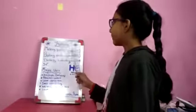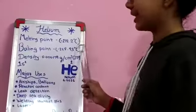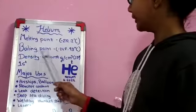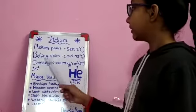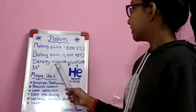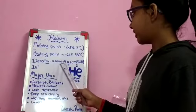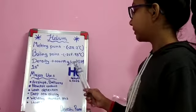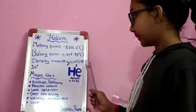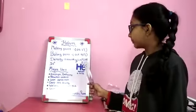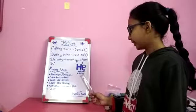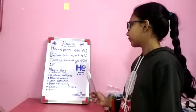Its melting point is minus 272.0 degrees Celsius. Its boiling point is minus 268.93 degrees Celsius. Its density is 0.00179 grams per centimeter cube STP. This is atomic number, atomic symbol, and atomic mass 4.0026.